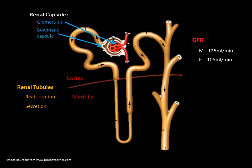If GFR is too slow, everything will be reabsorbed including the waste products and they may not be excreted properly in the urine. GFR is directly related to the pressures of the glomerulus blood and the glomerulus capsule. For example, if a person were to have a severe blood loss, there would be a decrease in blood volume and therefore a decrease in blood pressure at the glomerulus, resulting in a decrease in the glomerular filtration rate. If this drops too low, filtration will stop completely.